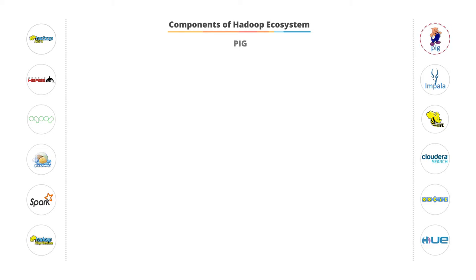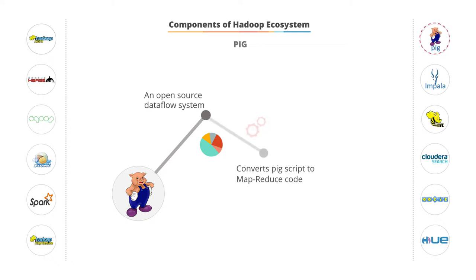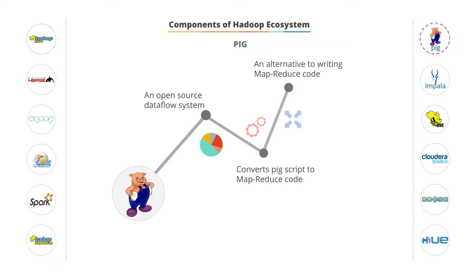Another tool we'll be looking at is Pig. After the data is processed, we need to analyze it. It can be done by an open-source, high-level data flow system called Pig. It is used mainly for analytics. Pig converts its scripts into the Map and Reduce code, thereby saving the user from writing complex Java-based MapReduce programs.